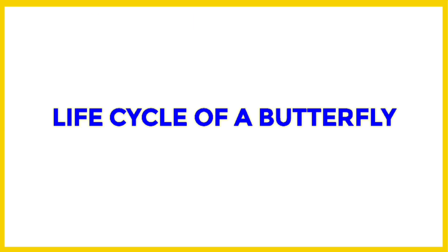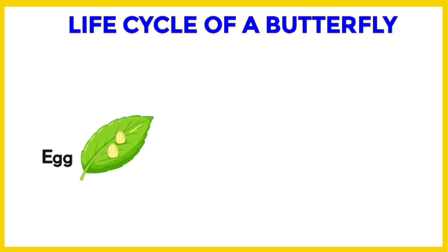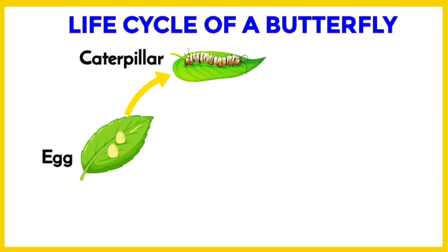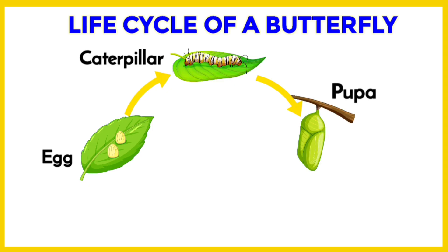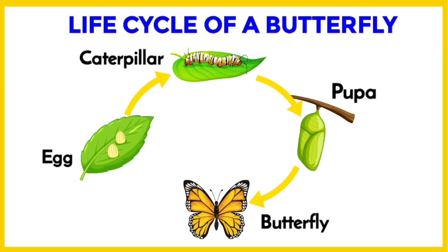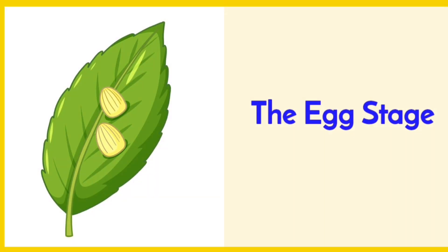One of the most fascinating life cycles in nature is that of a butterfly. A butterfly doesn't start its life journey as a colorful, beautiful insect. It goes through four stages in its life cycle: the first stage is the egg, followed by the caterpillar, then the pupa stage, and finally it becomes an adult butterfly. Now let's understand these four stages one by one in detail.